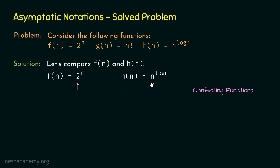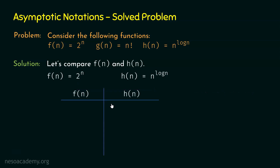Comparing conflicting functions is not straightforward. In order to compare them, we need to apply logarithm to these two functions. After applying logarithm, we will get simplified forms that are easy to compare. So let's apply log base 2 to fn and hn, since fn has 2 as its constant base.